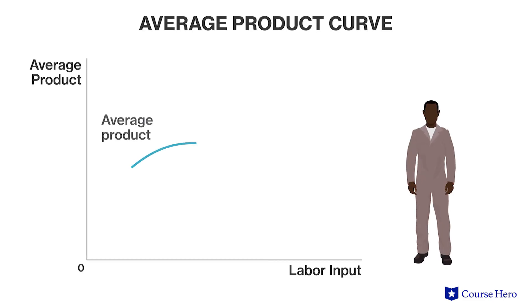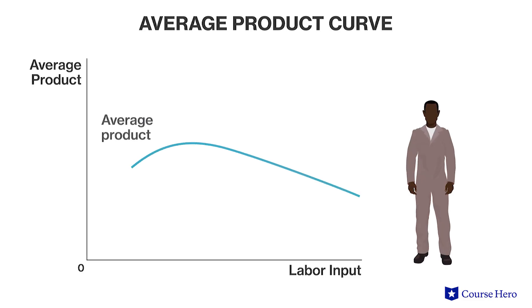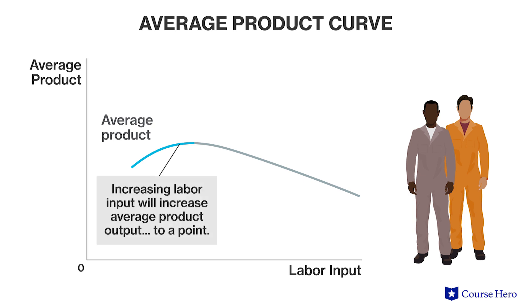The average product curve for a typical good is shaped like an inverted U. Typically, the average product curve will rise sharply if the labor force increases from one worker to two, because the extra worker allows for a division of labor that enables specialization to occur. This is shown in the marginal product curve as the positively sloped portion, because the second worker adds more to the production process than the first worker. The slope of the average product curve will also be positive as long as this process of specialization continues.